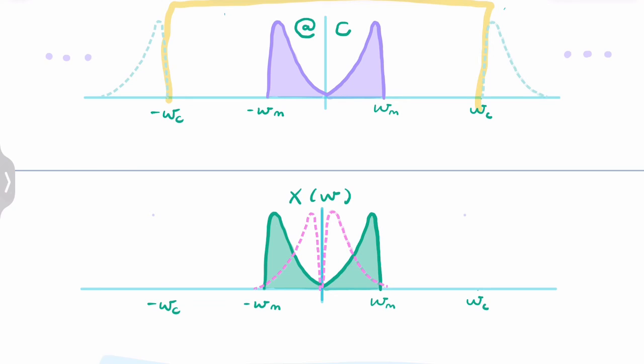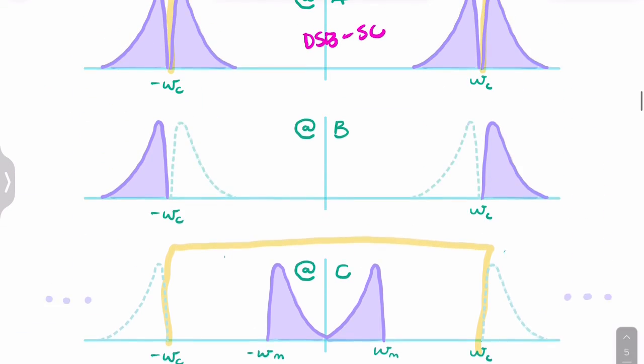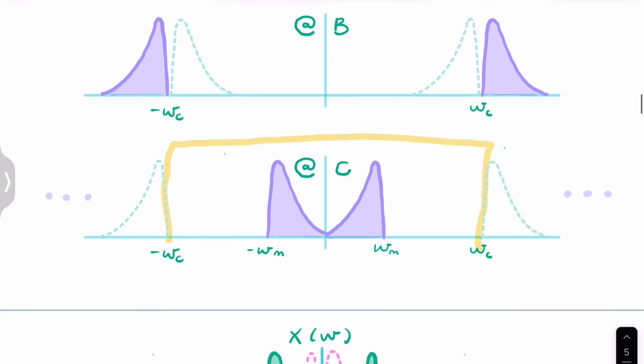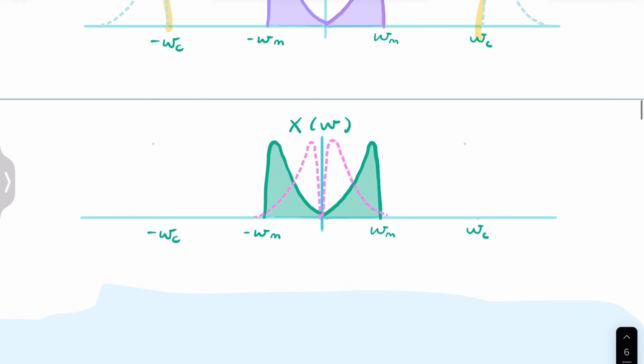The spectrum of the message has been reversed. Our original message had a high amount of low frequency and low power for high frequency. But after scrambling you have low power for low frequency and high power for high frequency. The scrambler has essentially reversed the spectrum of our message.